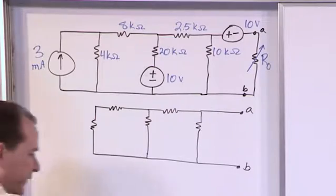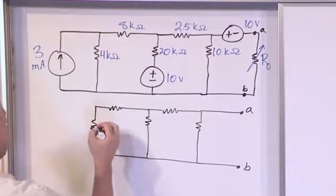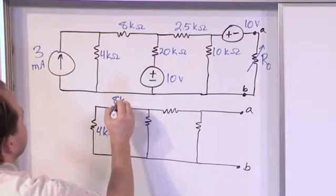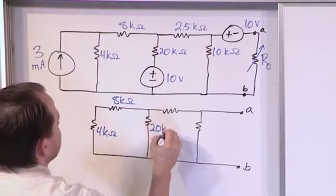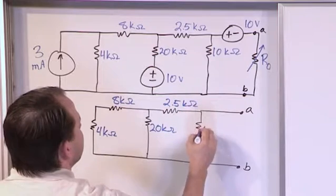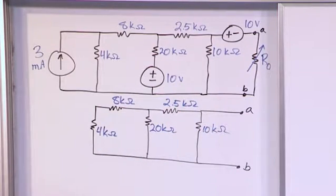So the values of these resistances are as follows. Alright, so this is 4 kilo ohms. This is 8 kilo ohms. This is 20 kilo ohms. This is 2.5 kilo ohms. This is 10 kilo ohms. So this is a really simple resistive network that I know that I can use series and parallel combinations to take care of.